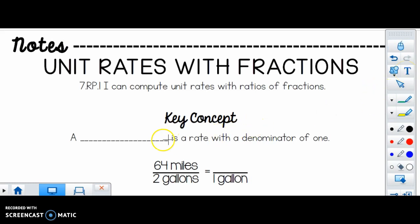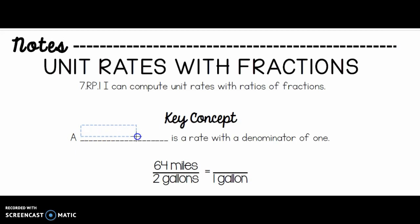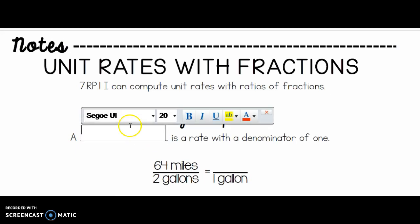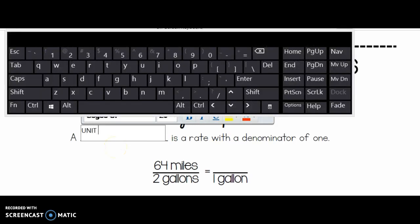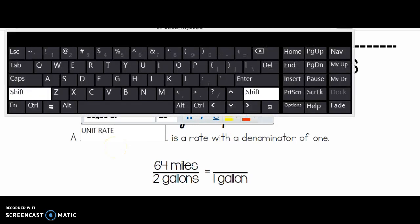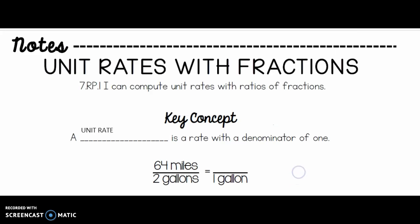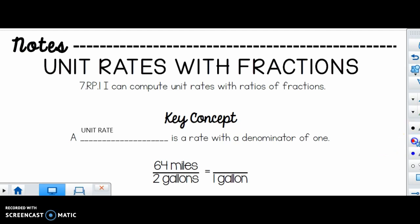Today, don't forget that a unit rate — I'm going to type it in because my handwriting on this mouse pad is not good — a unit rate is a rate with a denominator of one. So every time we want to find out how much one thing is, that's called a unit rate.